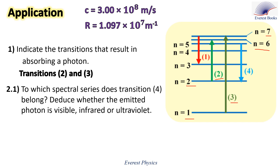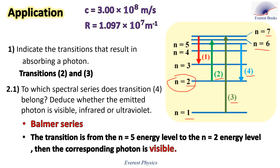Part 2.1: to which spectral series does transition 4 belong, and is the emitted photon visible, infrared, or ultraviolet? Looking at the figure, transition 4 corresponds to a transition to N = 2. Therefore, this transition belongs to the Balmer series. Since this transition is from the energy level of quantum number N = 5 to the energy level of quantum number N = 2, the emitted photon is visible.